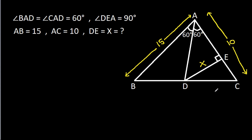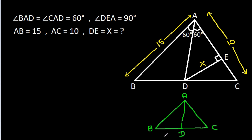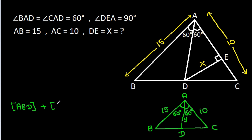In triangle ABC, with vertices A, B, C, and D — we have AB is 15, AC is 10, Angle BAD is 60 degrees, and Angle CAD is 60 degrees. Suppose AD is Y. Then area of ABD plus area of ACD will be equal to area of ABC.